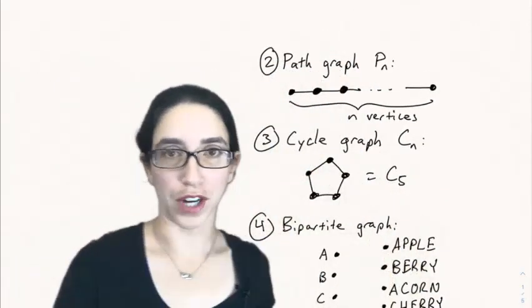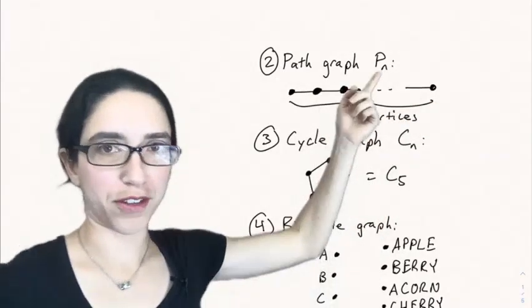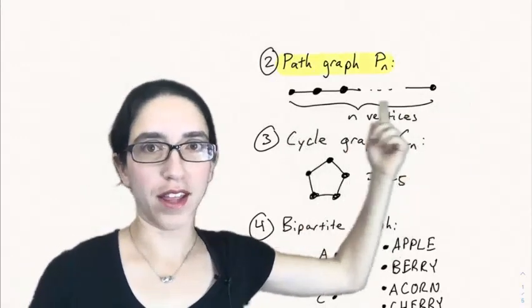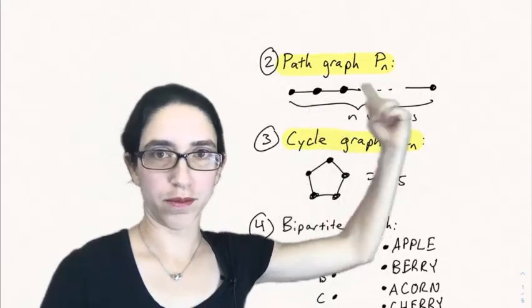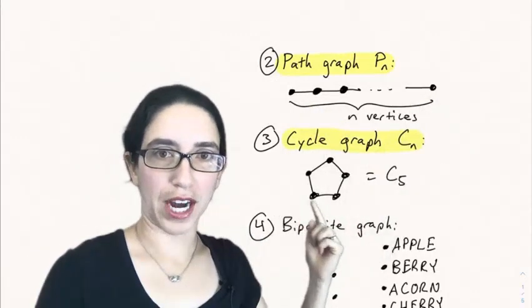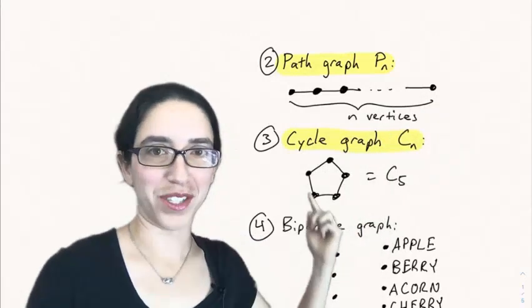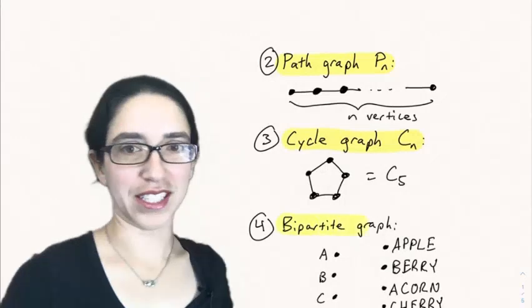There's lots of other important graphs so two of them are the path graph and the cycle graph. So the path graph which we write as Pn is the graph on n vertices that just makes a path of length n. So you just connect them straight across whereas the cycle graph is when you connect the first and last points of a path graph to form a cycle. And here's the cycle graph C5 as an example.